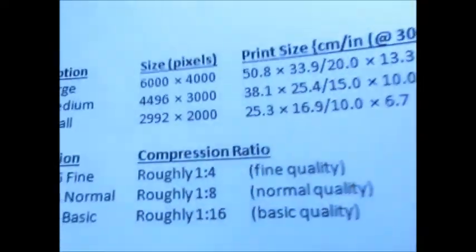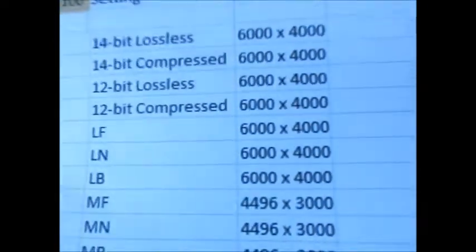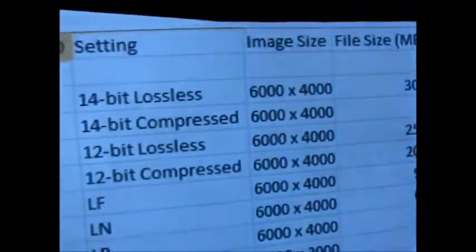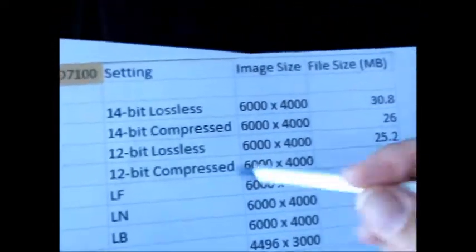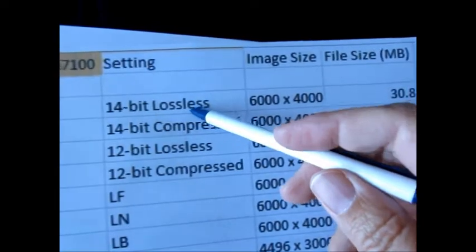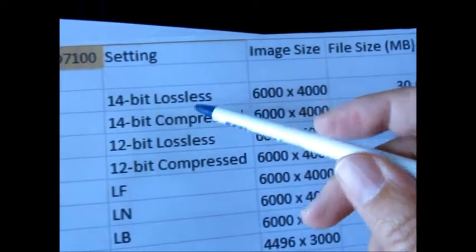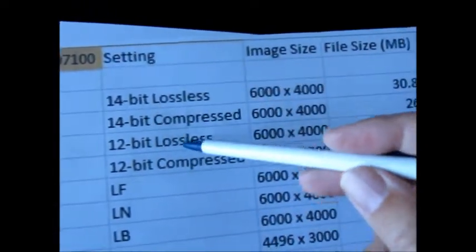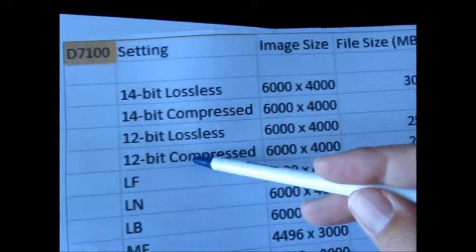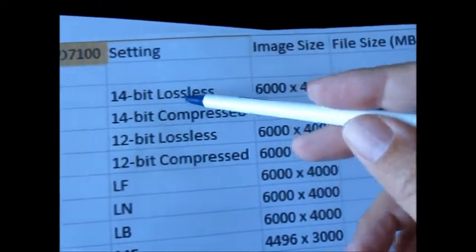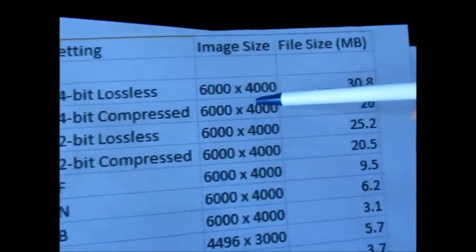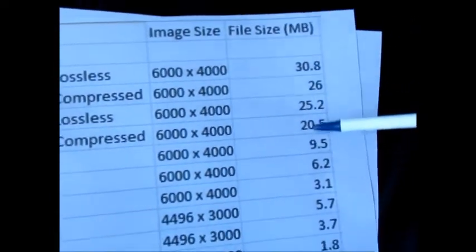Now let's talk about some corresponding file sizes. Let's talk about RAW. We have 14-bit lossless. This is in the Nikon d7100. I also have the d5100 and the d3100, but those are capable of 12-bit RAW files. They're not capable of 14.